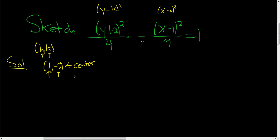And now we have to find a and b. In a hyperbola, a is just the square root of whatever you see there. So a is the square root of 4, which is 2. And b is the square root of 9, which is 3.